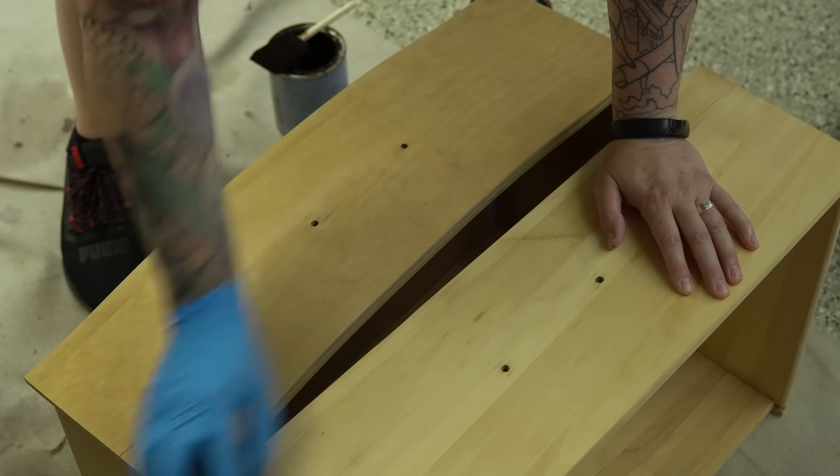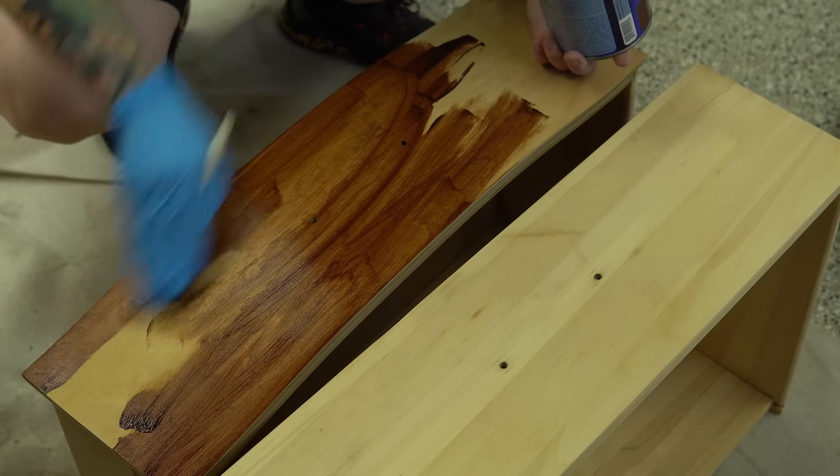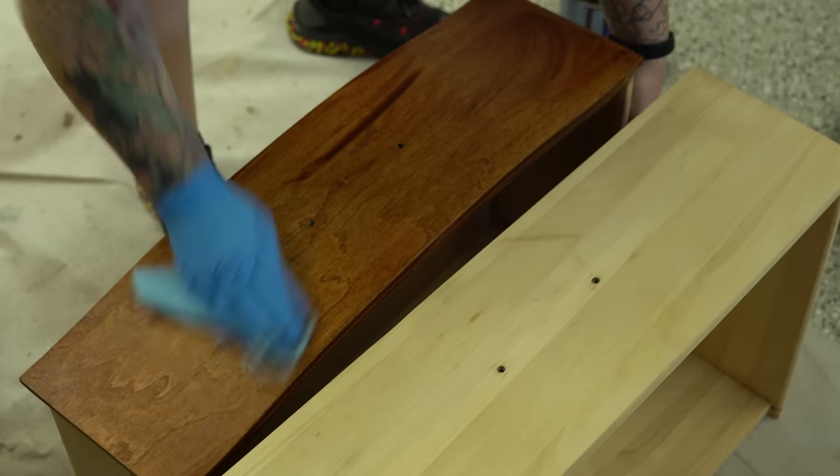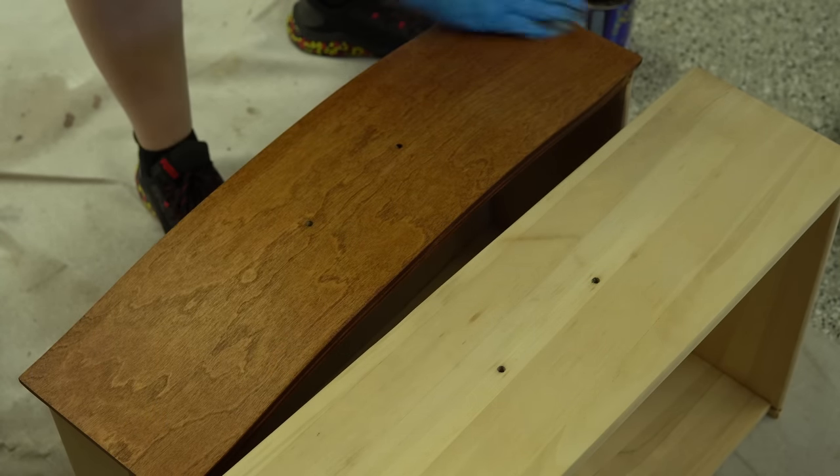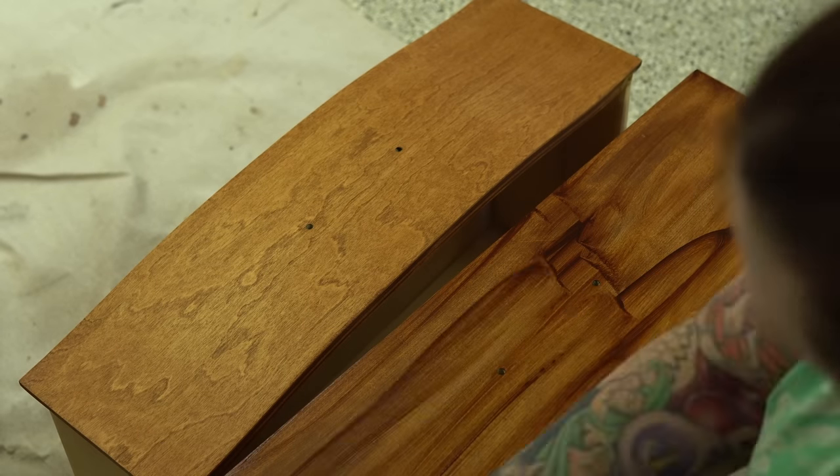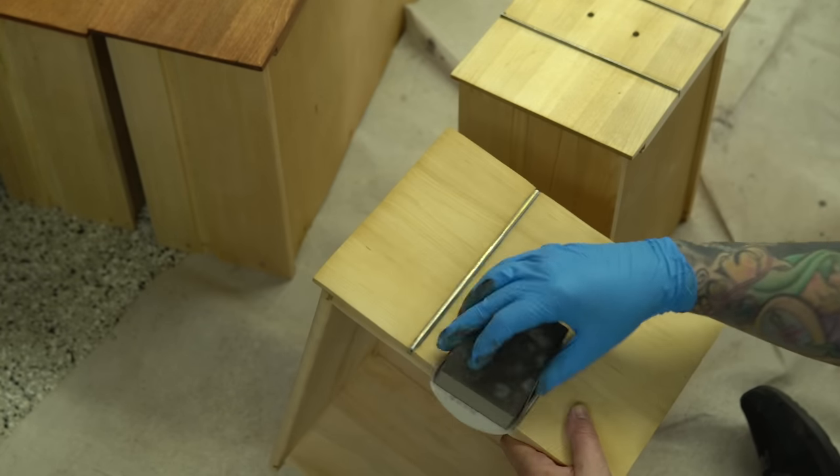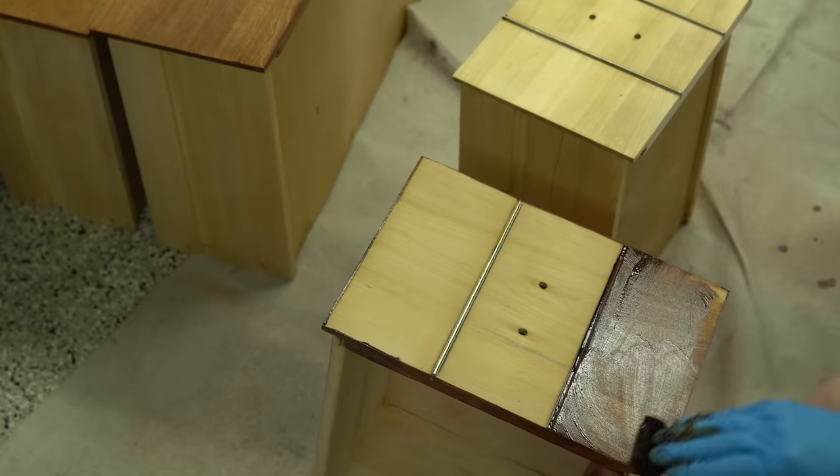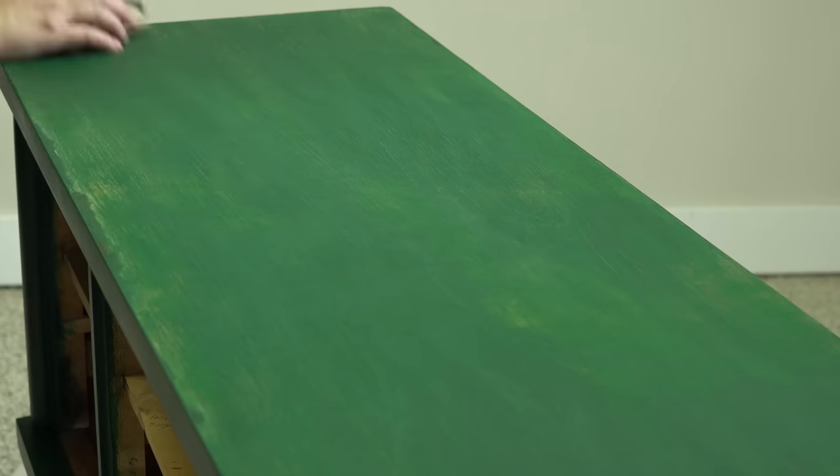So first I'm using General Finishes gel stain in the color nutmeg and this is a test. I want to see how bad this is going to look with these two different types of wood. If you've seen any of my other videos you know that normally I don't mind having different types of wood on drawer faces. In fact I usually embrace those differences but what I want to do here is see if I can figure out a way with stain and toners to make these drawers not only look like they could possibly be the same type of wood but to make them look like a high-end type of wood which I'm hoping is going to sort of elevate this dresser a little bit.